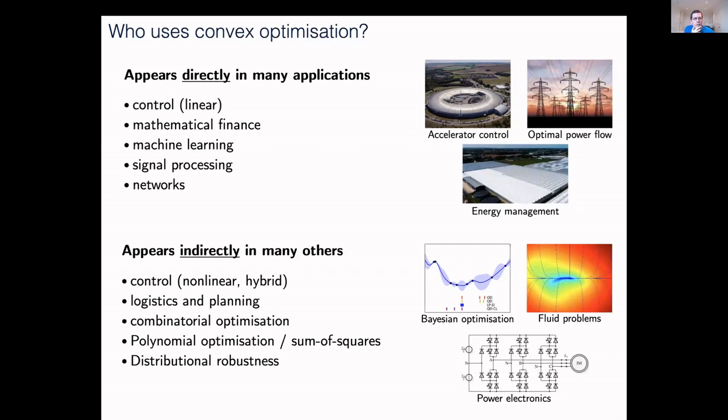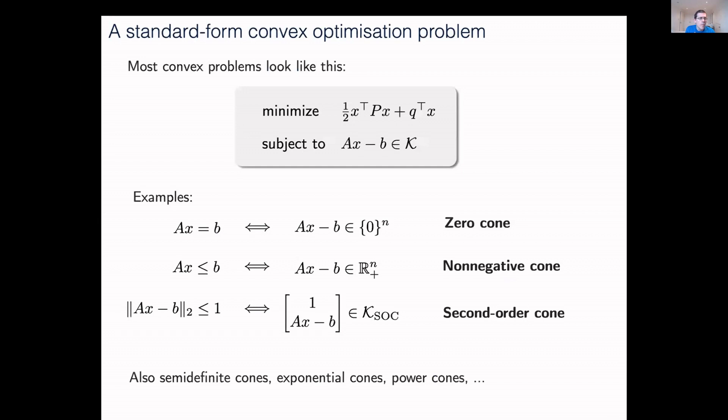I'll start by showing you the type of problem that we can solve. We have a minimization problem with a quadratic objective. P is a general positive semi-definite matrix, could be zero if you want. And then we have a collection of constraints: Ax minus b has to live in a cone.